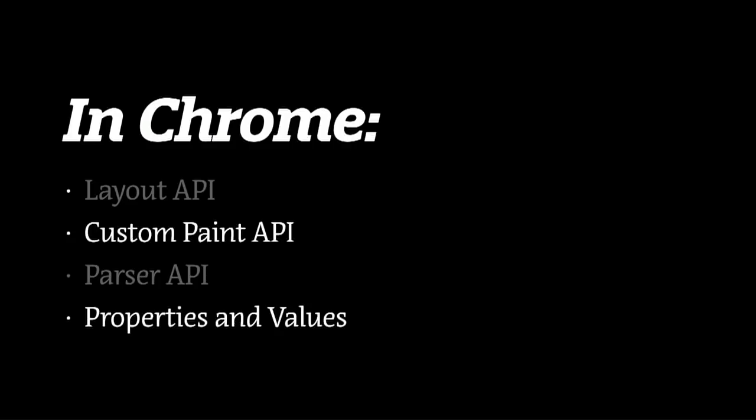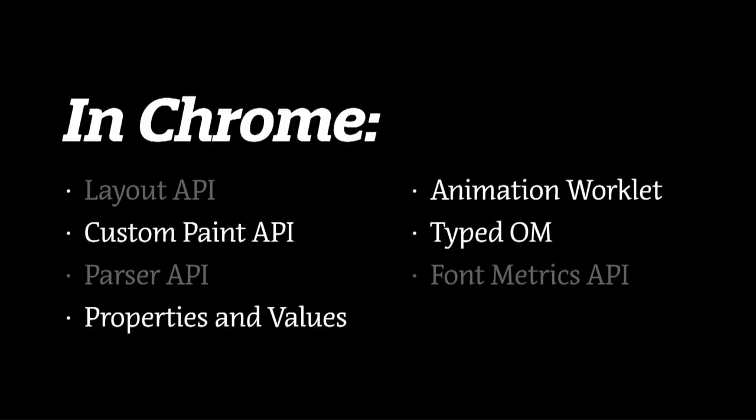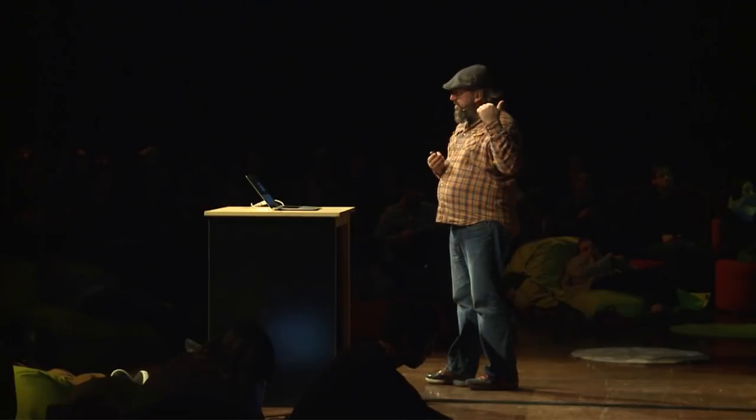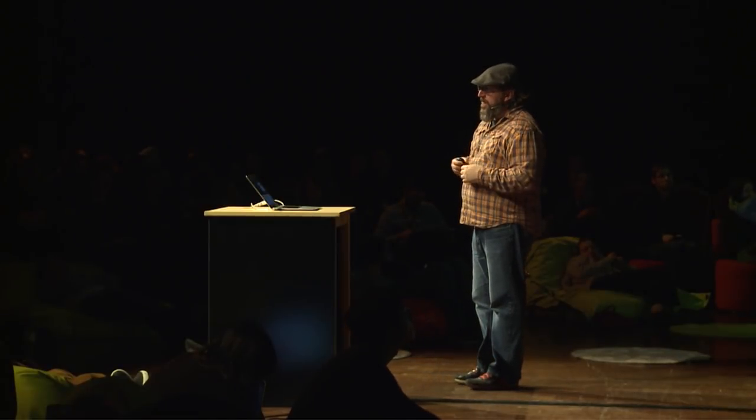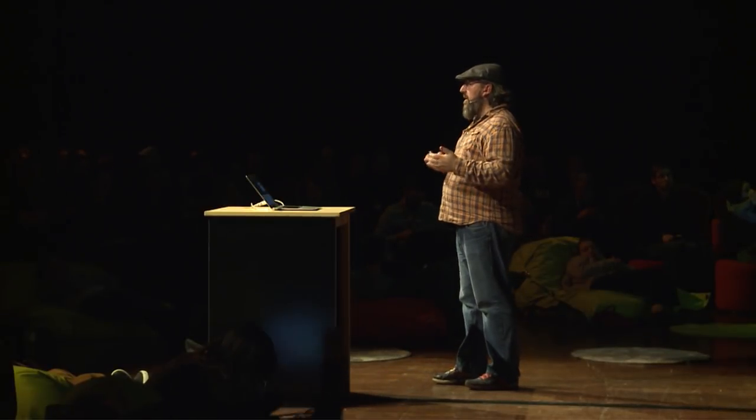Chrome is really the only one that has implemented anything substantial. We don't have layout API, but we do have custom paint. We don't have parser, but we do have properties and values and a couple other things. When we think about what we need for developing something that responds to layout, we need two specific things: a parser API for a container query specification — we don't have that yet — and a layout API — we don't have that yet either.